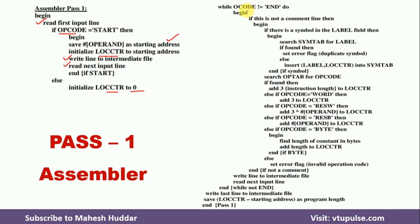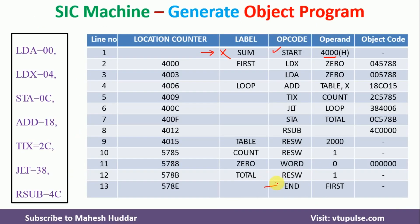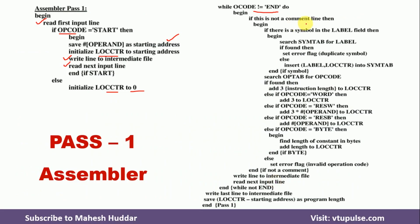Next, unless and until we reach the end of the program — that is, the opcode is not equivalent to END — we keep reading one line at a time and performing the operations in the loop. First we read the line and check whether it is a comment line or not. If it is a comment line, we skip it and go to the next line. If it is not a comment line, we perform different operations.